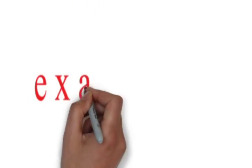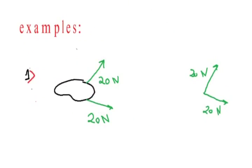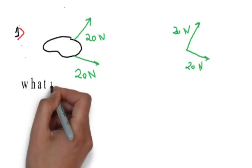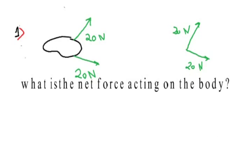We will discuss some examples where we will use the parallelogram law for adding two vectors. In the first example, two forces each of 20 Newton are acting on a body. What will be the net force acting on the body?